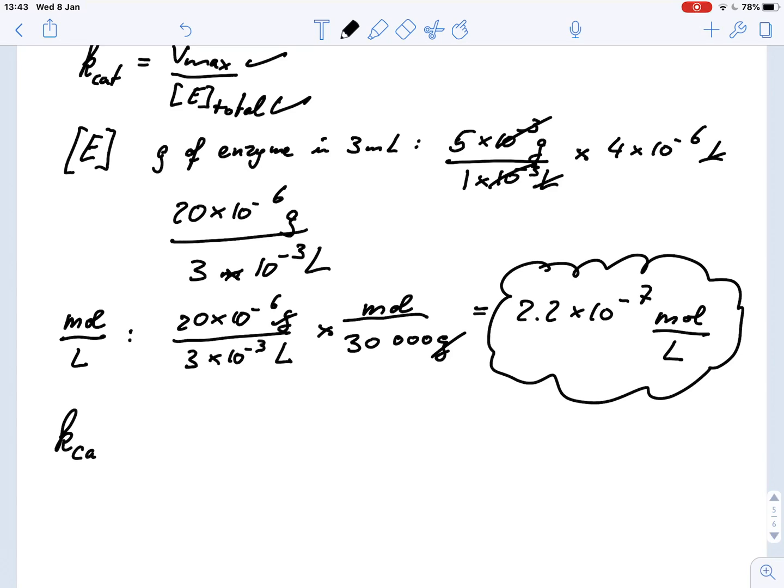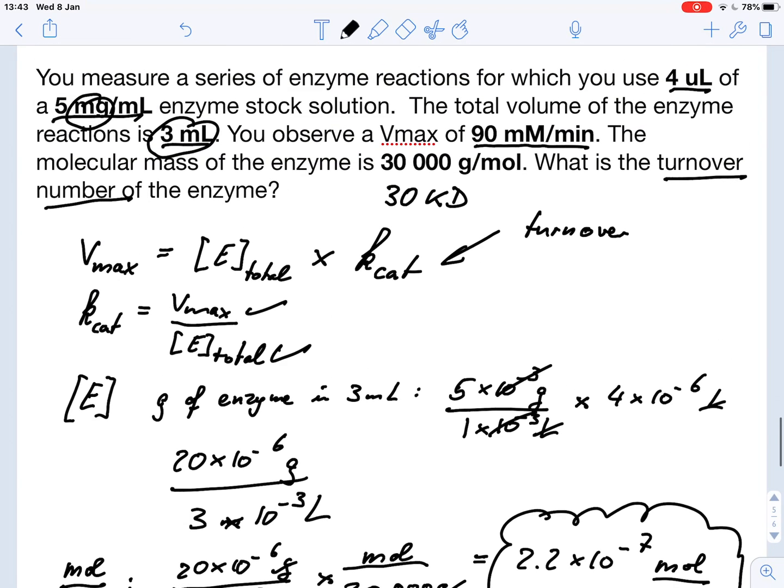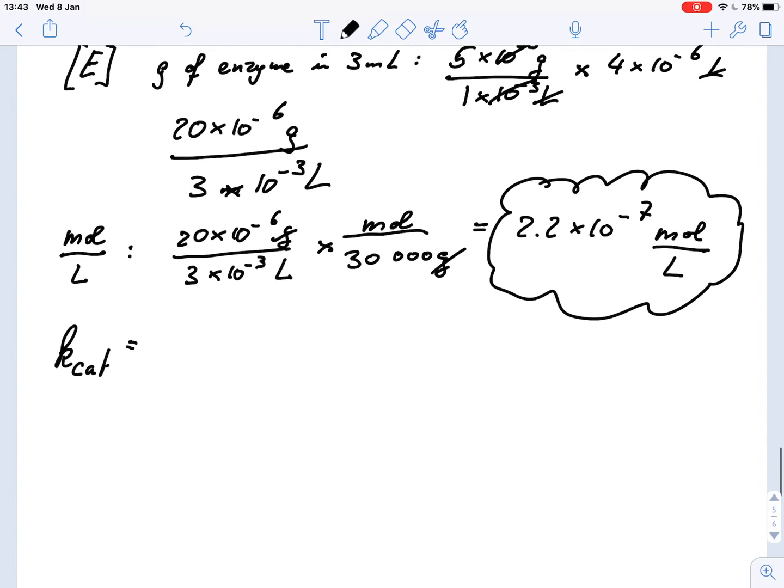So we have Kcat equals 90 millimolar per minute—so 90 times 10 to the minus 3 molar per minute—divided by 2.2 times 10 to the minus 7 molar. And if we do that, we will get something along the line of roughly 405,000.